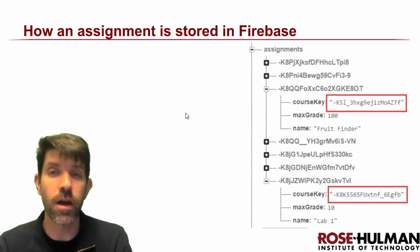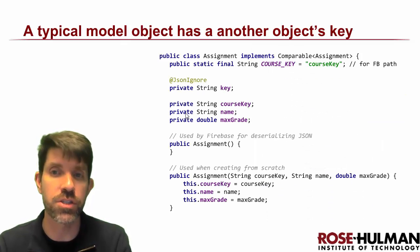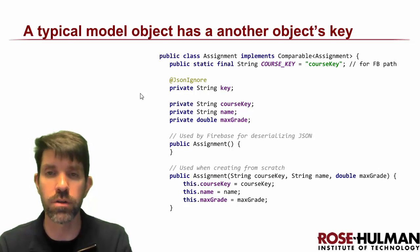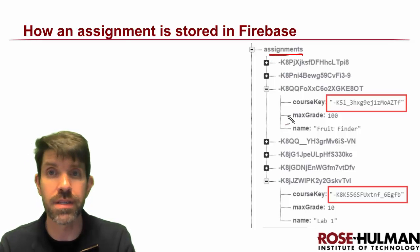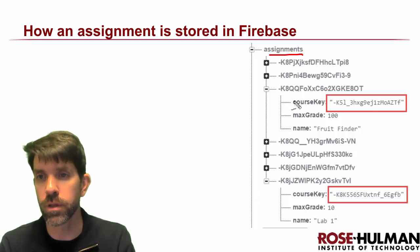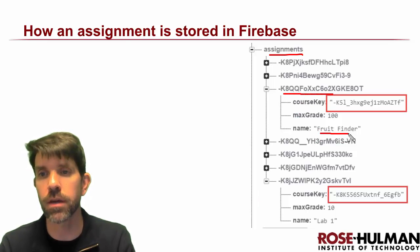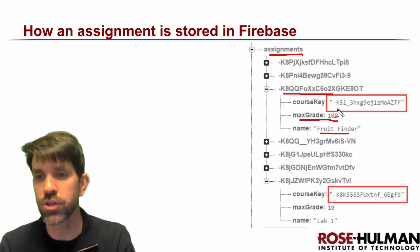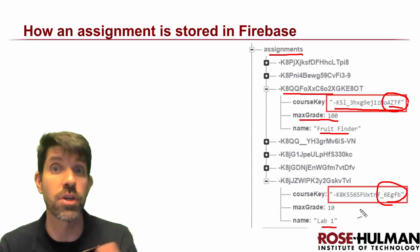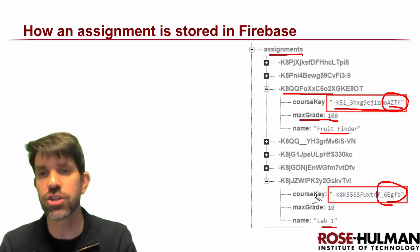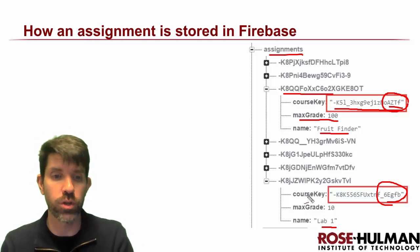How are they going to be stored in Firebase? With that code, it's straightforward to model in Firebase — we have three fields, and one is ignored because it's already in Firebase. Under the assignments path, we see a whole bunch of assignments. One particular assignment — the Fruit Finder assignment — has a maximum grade of 100 and is associated with a specific course key (the image recognition course). Lab one is associated with the Android course. So each assignment has a way to determine which course it's part of.